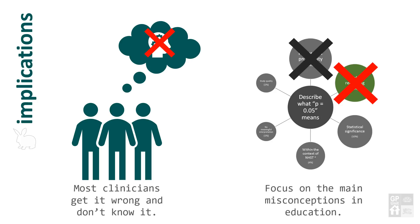As for the term 'statistical significance', we need to remember that it has a narrow technical meaning that is commonly conflated with the vernacular meaning of significance — that is, substantial or important. Statistical significance basically means mathematically unusual. It is best to avoid the term when you don't need to use it.